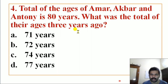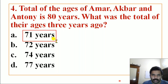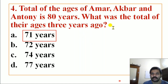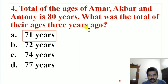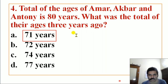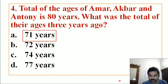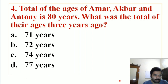Next question involves ages. The question asks about someone's age three years ago. Options are 71, 72, 74, and 77 years. The correct answer is 71 years. There are three persons; you reduce by minus three each, so minus nine total. What was the age before three years means you subtract nine. After three years means you add nine. So the correct answer is 71 years.